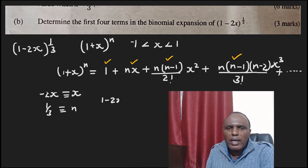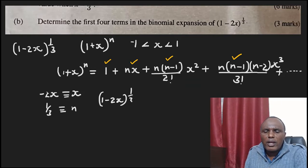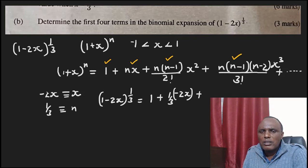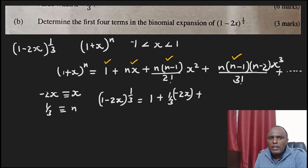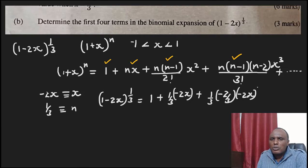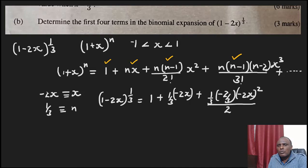So for 1 minus 2x raised to power 1 over 3, the first term is 1. The second term is 1 over 3 — that is our n — multiplied by negative 2x. The third term is n, which is 1 over 3, multiplied by (n minus 1), which is 1 over 3 minus 1 giving negative 2 over 3, multiplied by (negative 2x) squared, over 2 factorial.